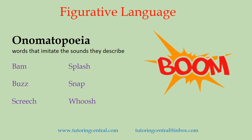Onomatopoeia — it's fun to say this word! Onomatopoeia are words that imitate the sounds they describe. If you watch the old Batman TV shows you certainly would have seen a lot of this. Examples include: bam, buzz, screech, splash, snap, whoosh — and there are many more. These are basically words that imitate the sounds they describe.